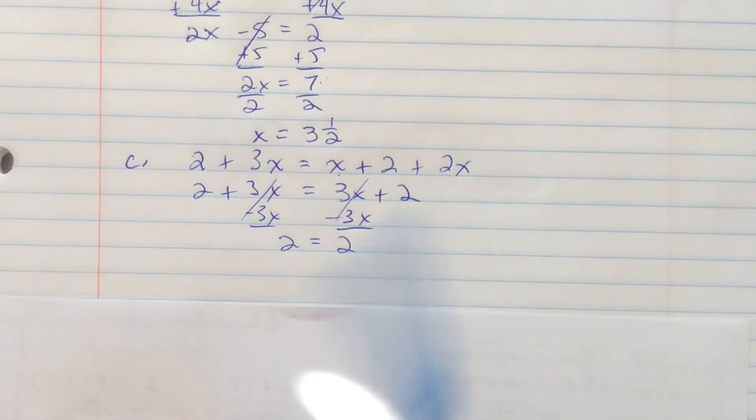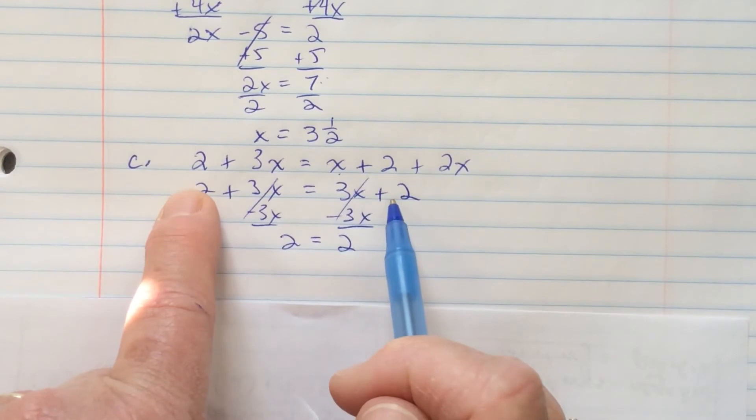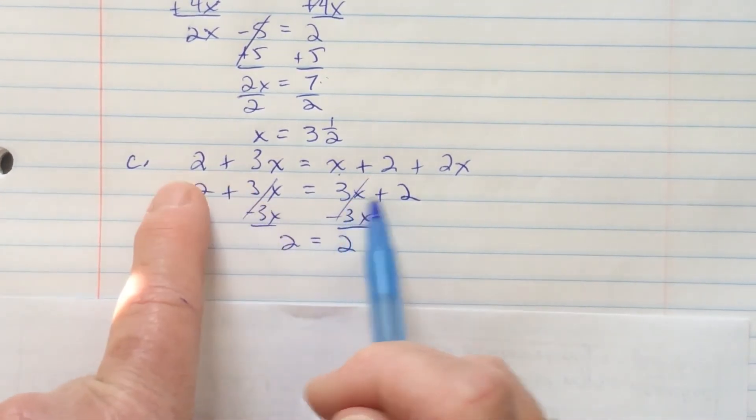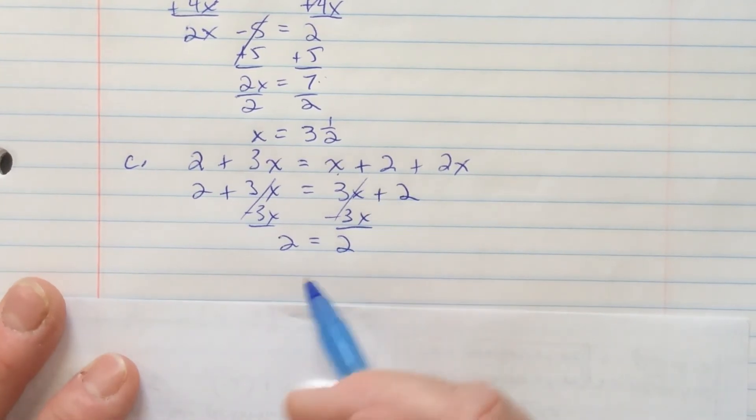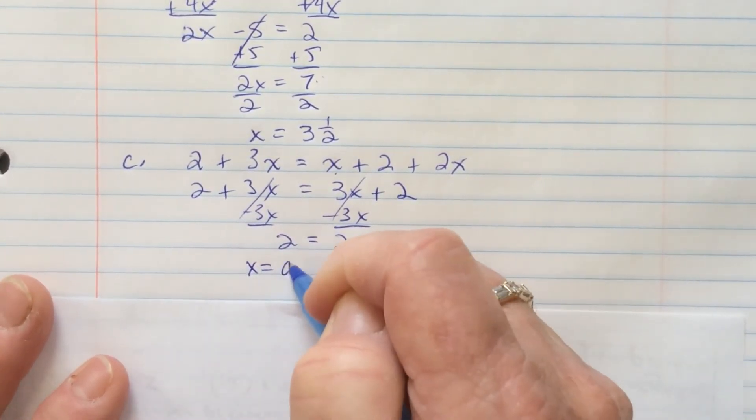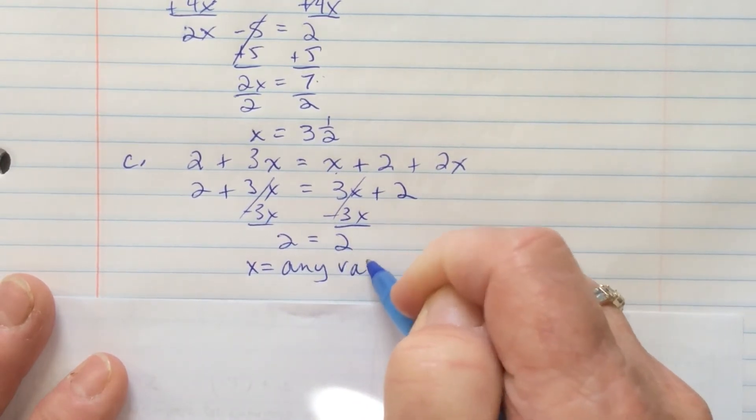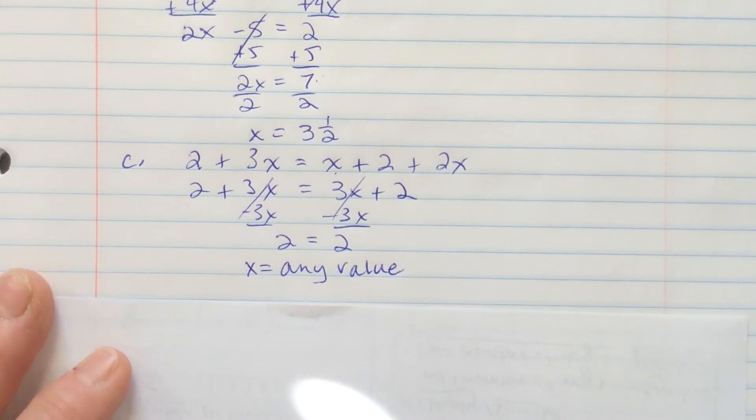What that means is that it doesn't matter what x is. It will always be true. If x is 0, I would get 2 equals 2. If x was 1, I would get 5 equals 5. If x was 2, I'd get 8 equals 8. It doesn't matter what x is. So, x equals any value or any number. x can be anything.